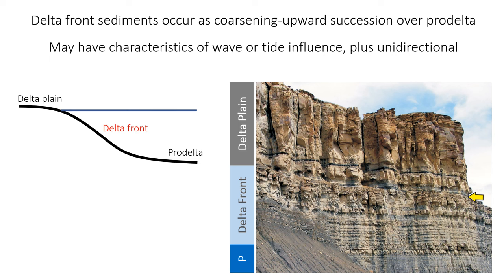Delta facies always prograde — the shoreline shift in deltas is always regressive — so the pro-delta will be overlain by delta front sediments. The delta front is a more proximal environment and therefore coarser-grained than the pro-delta, meaning delta successions are pretty much always coarsening upward. Because the delta front is above wave base, there might also be signals of wave or tidal influence — wave ripples, hummocky cross-stratification, or bi-directional crossbeds — in addition to current ripples, climbing ripples, hyperpycnal plume deposits, and potentially soft sediment deformation.